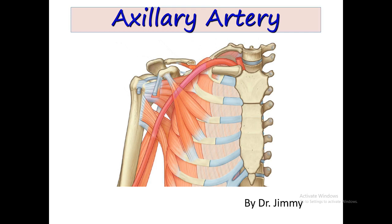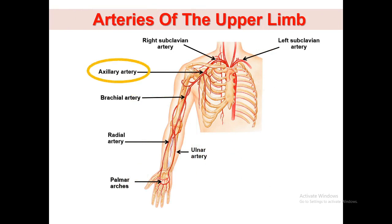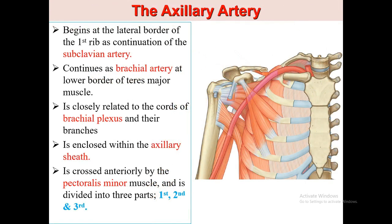It becomes the brachial artery at the inferior margin of the teres major muscle. The axillary artery is separated into three parts by the pectoralis minor muscle, which crosses anteriorly to the vessel. It starts at the lateral border of the first rib and continues downward to the lower border of the teres major muscle, so before it is the subclavian and after it is the brachial artery.